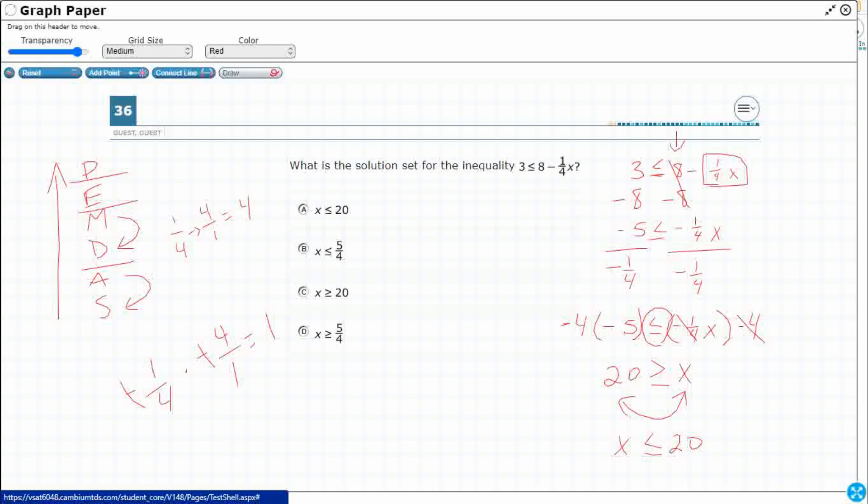Let's just pick something to test. Let's just pick 100. That's greater than 20, right? Actually, we want x to be less than or equal to 20, so let's make it 0. 0 is great. Let's just plug this in. 3 is less than or equal to 8 minus 1/4 times 0. That's going to be 0. 0 is good because it cancels that out.